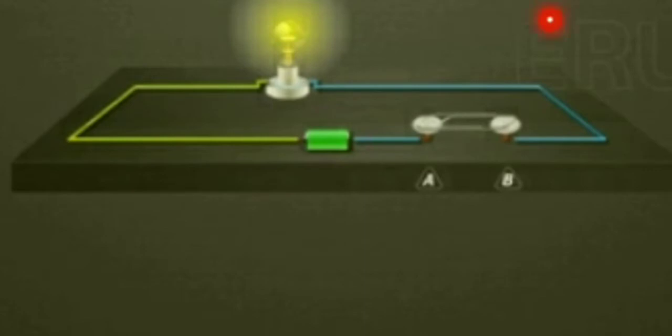When paper clip is used, the bulb glows because it is made up of metal. We saw in some cases the bulb glows and in some cases the bulb doesn't glow. The reason is that some materials are conductors and some are insulators.